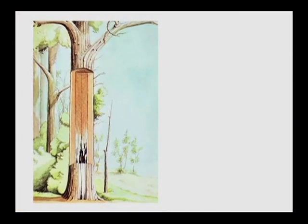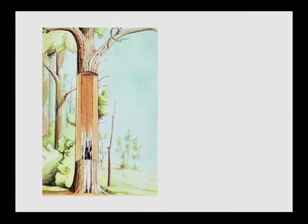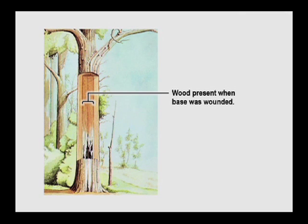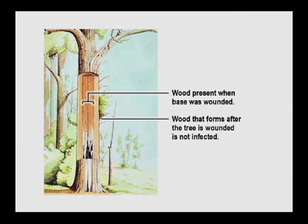Trees wall off or compartmentalize wounded areas to resist the spread of decay, confining it to the wood present at the time of wounding. The concept of compartmentalization was developed by Dr. Alex Shigo as part of his research for the United States Forest Service on biology of tree decay.